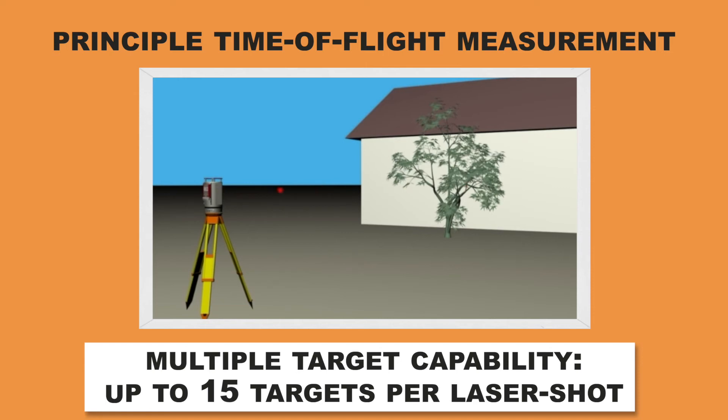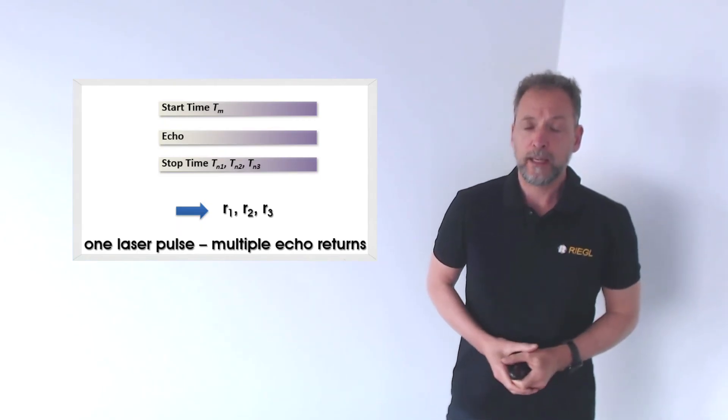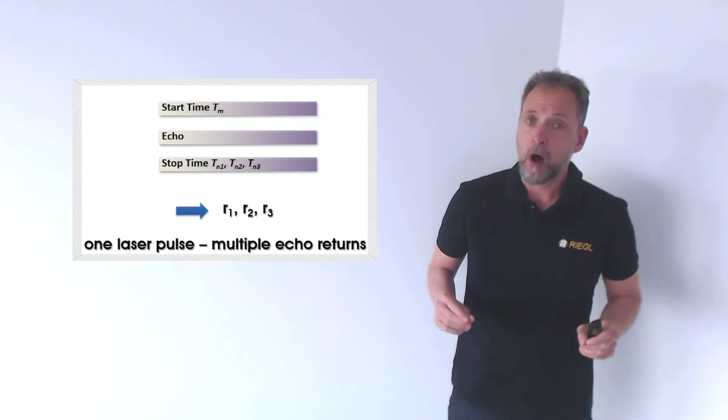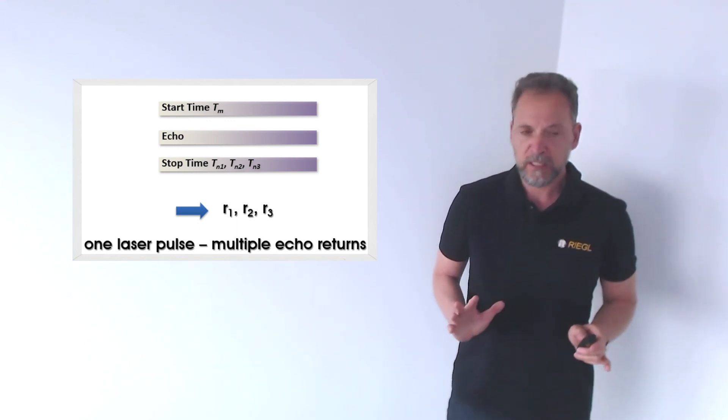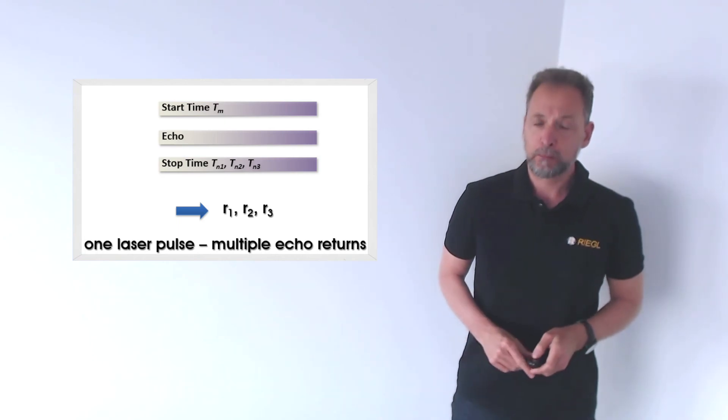But let's come back to the measurement principle. As you can read from our specs, we are measuring range within millimeters. So how accurate do we have to measure time to get that millimeter accuracy at the speed of light?